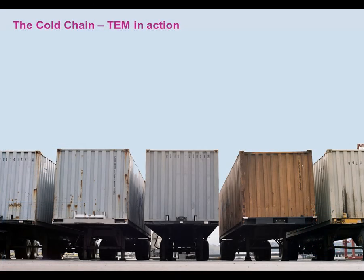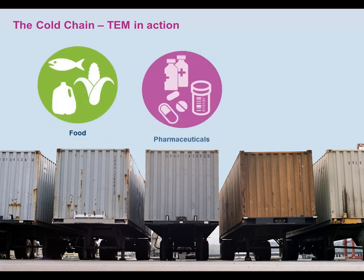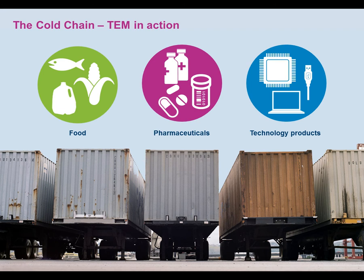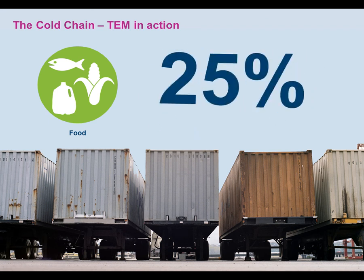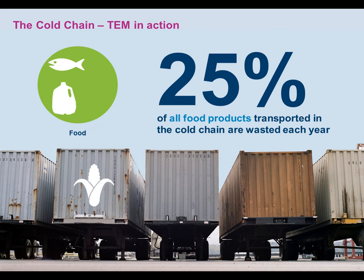Let's see how this is done using an example from the cold chain management industry. The cold chain serves to maintain the freshness and top quality of perishable products for extended periods of time. By doing so, the process eliminates doubts over the quality of the distributed food, pharmaceuticals, and technology products. Despite careful management, about 25% of all food products transported in the cold chain are wasted each year.